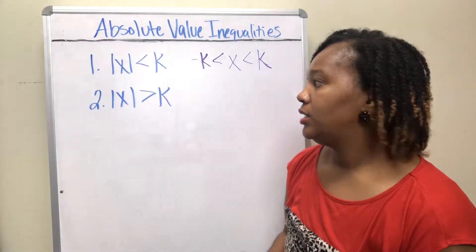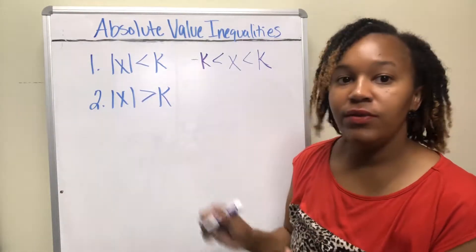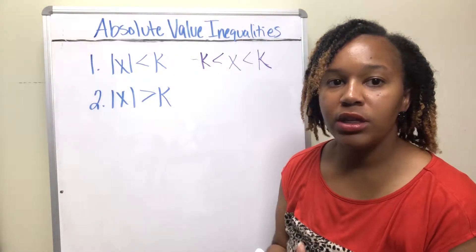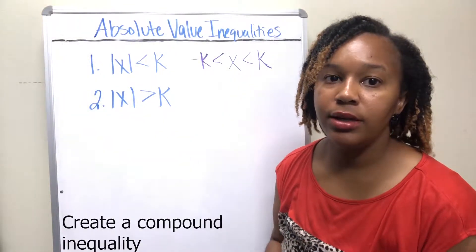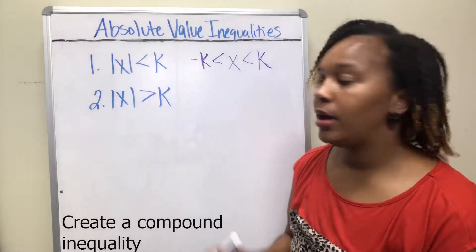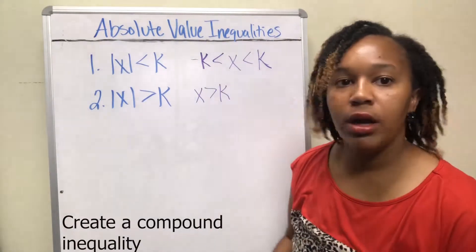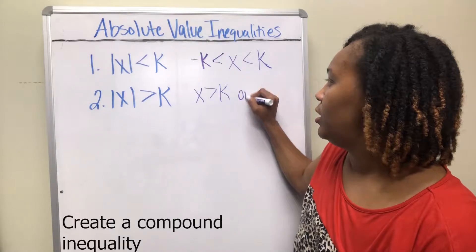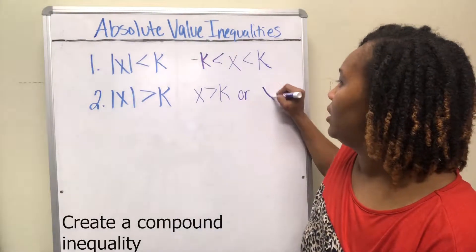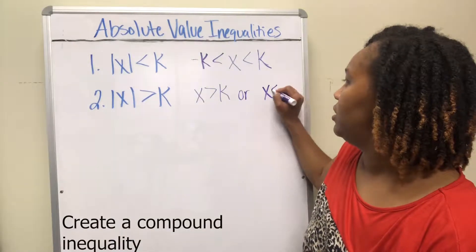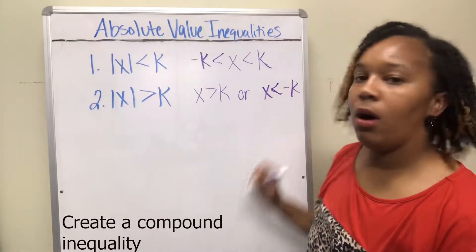Case two: if the absolute value is greater than the number, then you create a compound inequality. You do this by first dropping the absolute value bars, then joining a second inequality with the word 'or', and for the second inequality you change the direction of the inequality symbol and change the sign on the number.